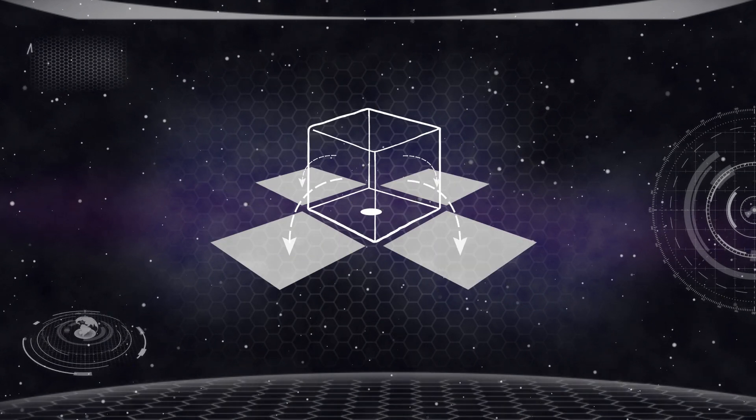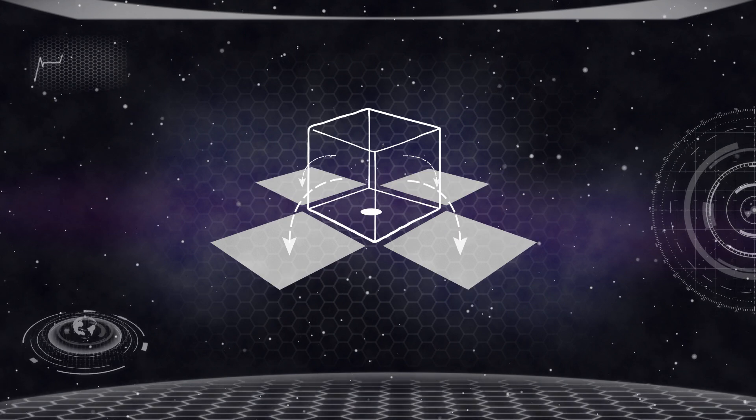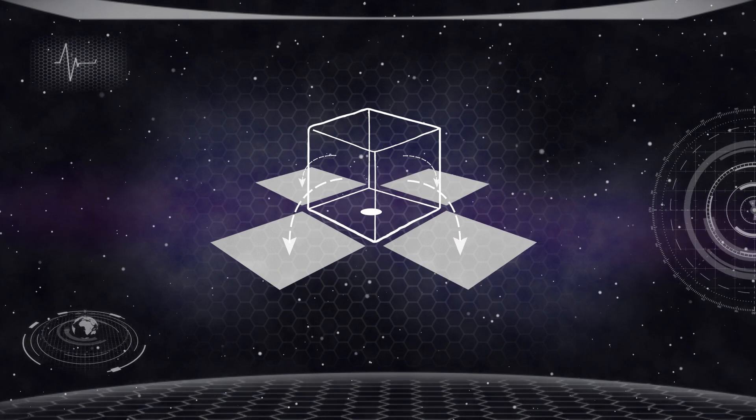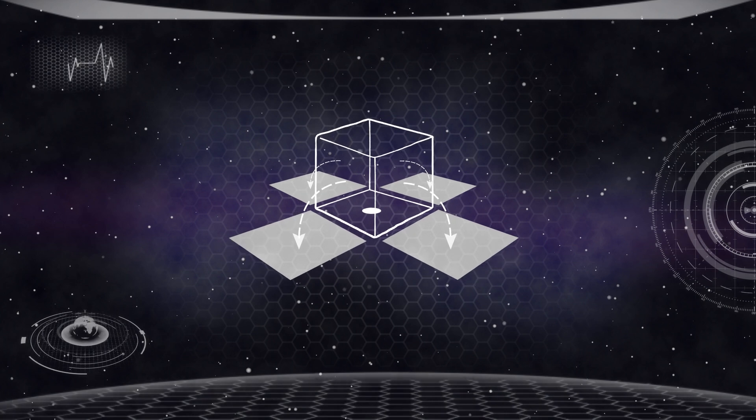Imagine that you're facing this cube. It can roll left, right, forwards or backwards. There's a dot on the bottom.